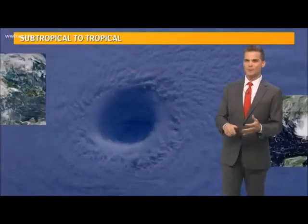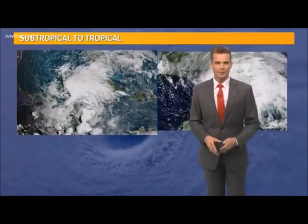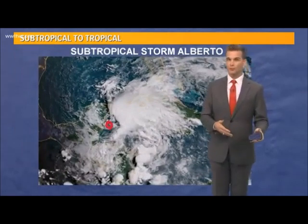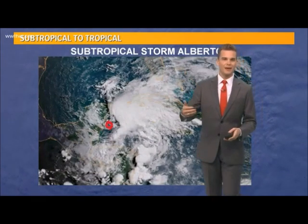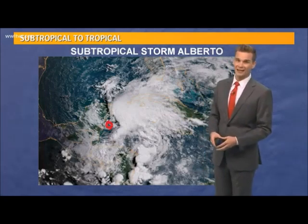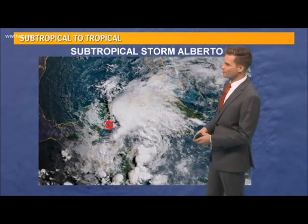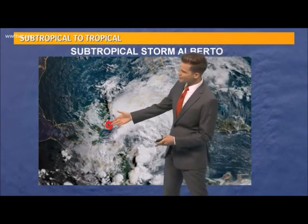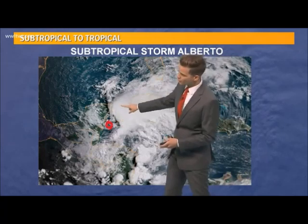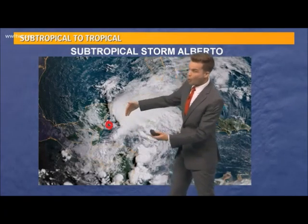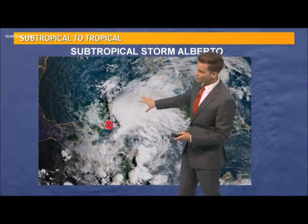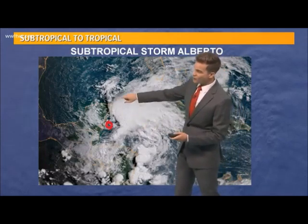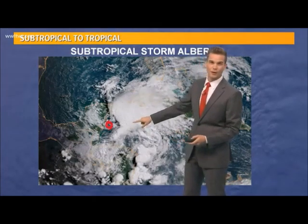So the low pressure is the same, but the structure is a little bit different. An example of that was subtropical storm Alberto back in 2018 — they can go through a transition period. Early on, you can see here the center of it, but notice where all the showers, thunderstorms, and clouds are: away from the center. This is where all the heavy rainfall is, and the wind field of this was very, very large.